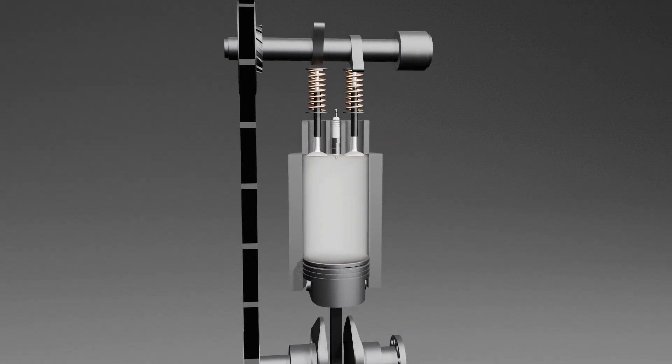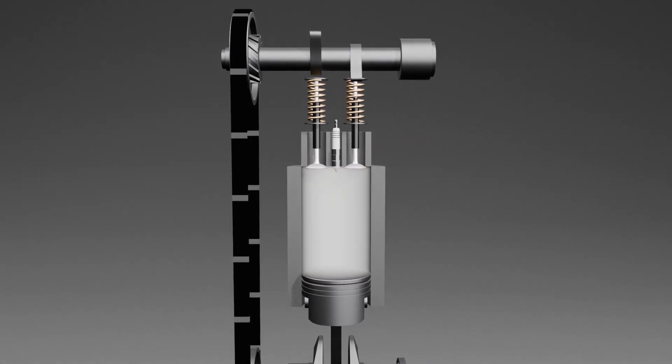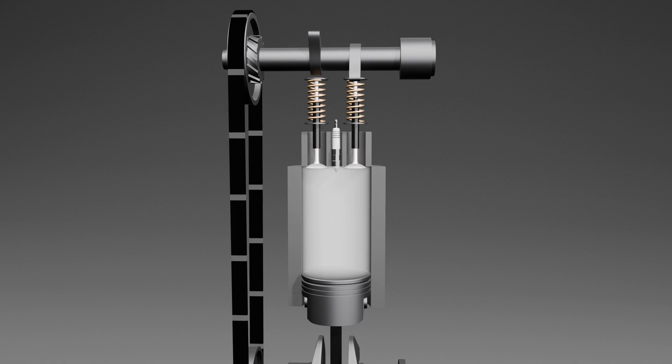Finally, the cycle ends with the exhaust stroke. After the power stroke, the cylinder is left with carbon dioxide, steam, and pollution from the burnt fuel-air mixture. These gases need to be expelled before the next cycle can begin.